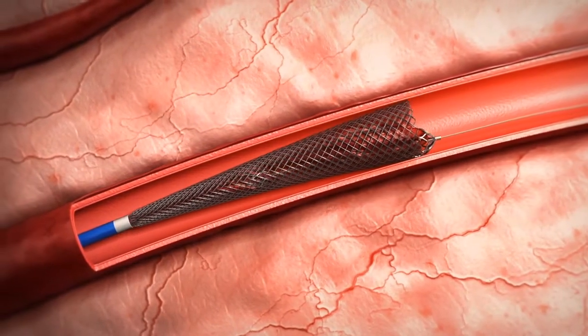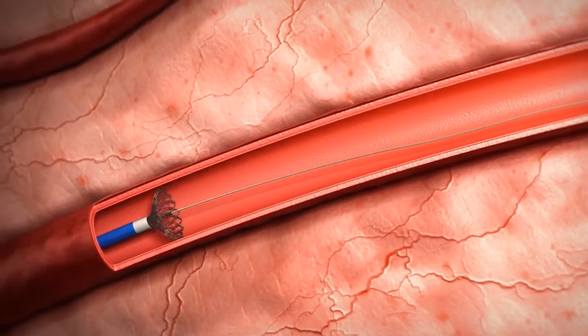Continued pulling collapses the trumpet with the cages and the clot into the sheath and out of the body.